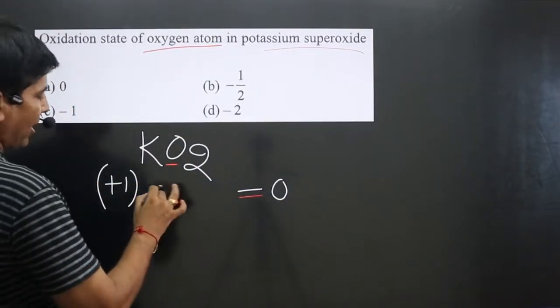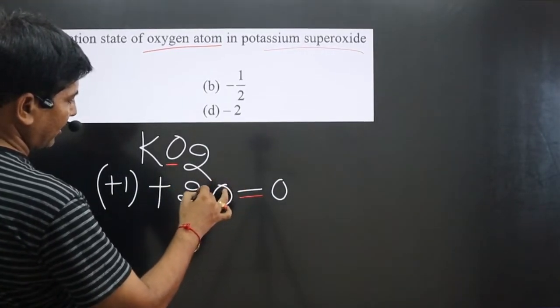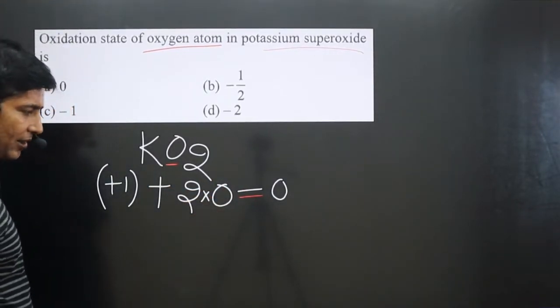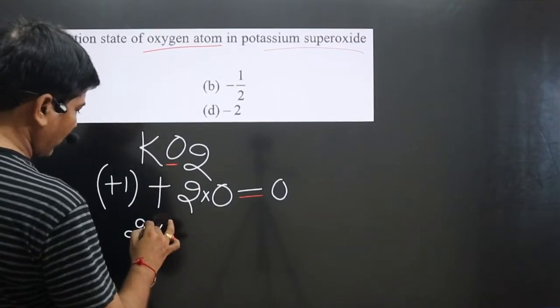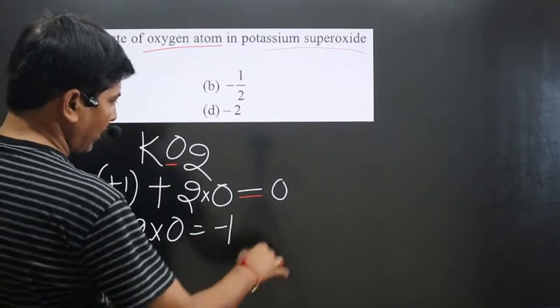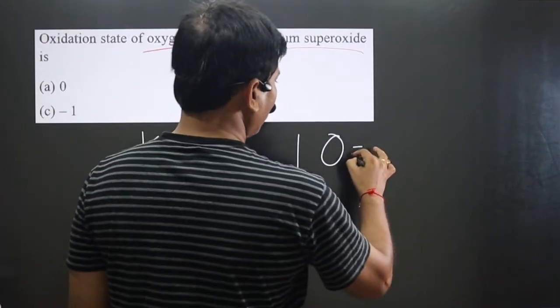One potassium is there at plus one. Two oxygen atoms are there, so two multiplied by oxygen. This equals zero, so two times oxygen equals minus one, then oxygen equals minus one by two.